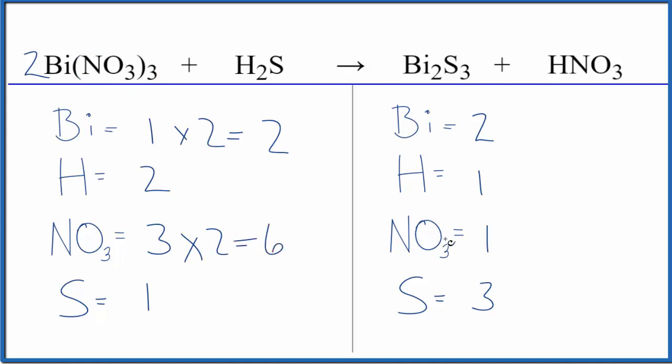Why don't we try to balance the nitrates here? We have six and just one, so we'll put a six here. One nitrate times six, six of those. One hydrogen times six, that gives us six hydrogens. But if we put a three here, two times three, that gives us six. And then one times three, that gives us three.